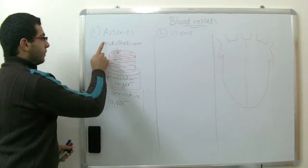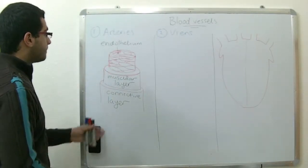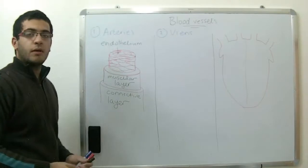So the endothelium, then the muscular layer, then the connective layer. This is the structure of the artery.